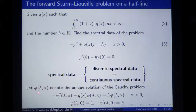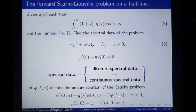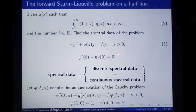I'm denoting by phi of lambda, x the unique solution of this Cauchy problem. It satisfies our Schrödinger equation and these initial conditions. In particular, if I have phi, it will satisfy this initial condition automatically.